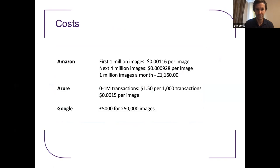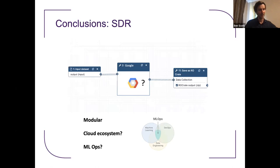The costs for cloud services are really very cheap. Amazon charges just over a thousand pounds for 1 million images a month. Azure is a similar price point. Google is 5,000 pounds for 250,000 images — really much, much cheaper than anything we can develop ourselves. So what does this mean for the SDR? In some ways it's excellent, because the SDR is modular so we can drop in a new service anytime. But it does beg the question: should we just embrace a cloud ecosystem and run all our workflows on Google infrastructure? Is MLOps a better way of approaching this than workflows built in Galaxy, or can we combine those approaches?